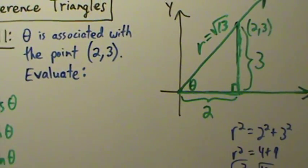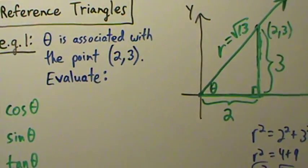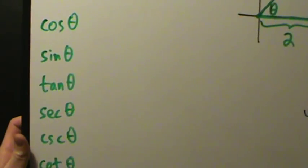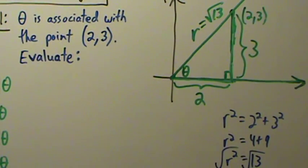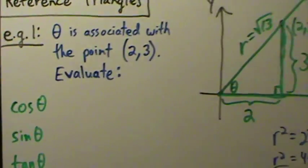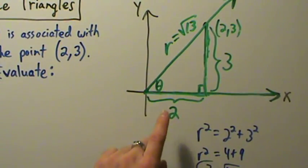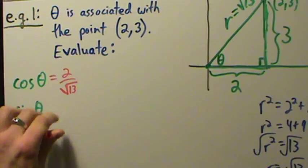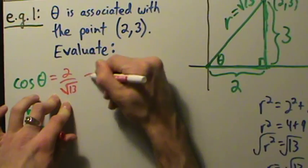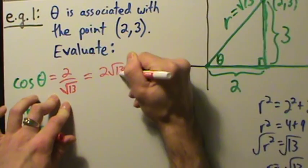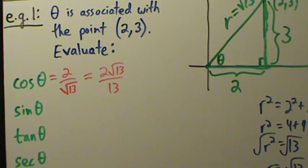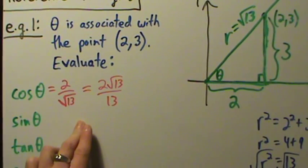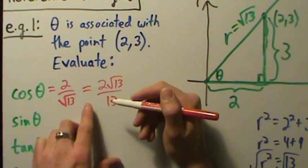This is now just a right triangle trig problem. With sides 2, 3, and √13, cosine of theta is adjacent over hypotenuse, so cosine of theta equals 2 over √13. If you need to rationalize the denominator, multiply top and bottom by √13 to get 2√13 over 13.